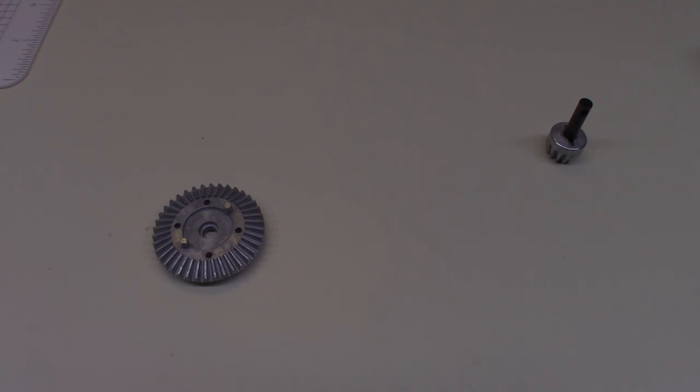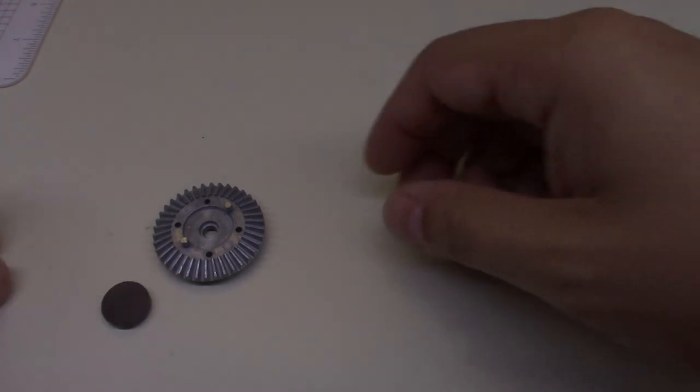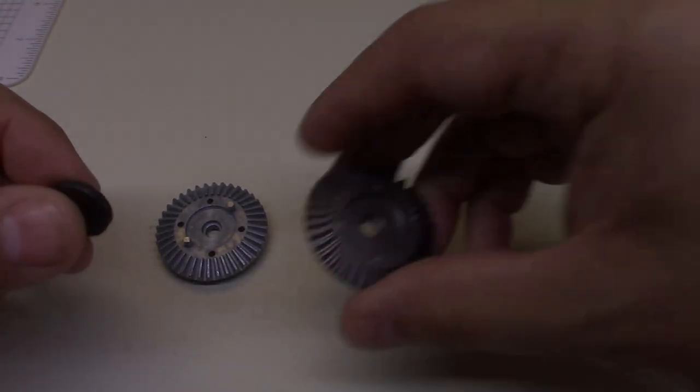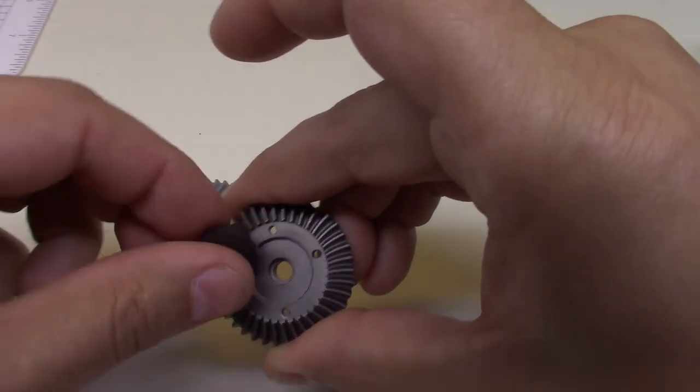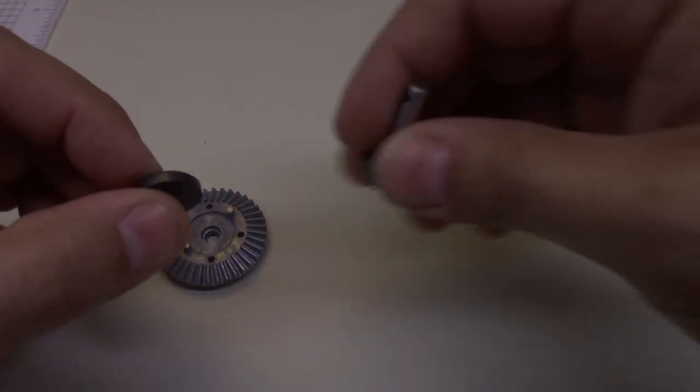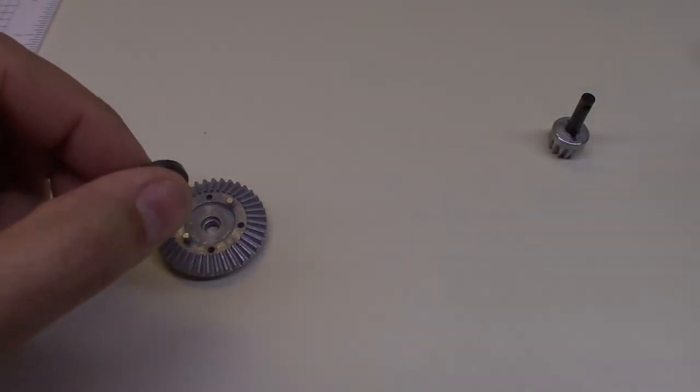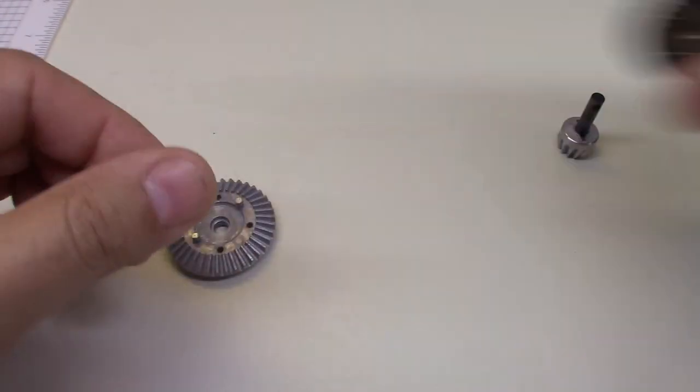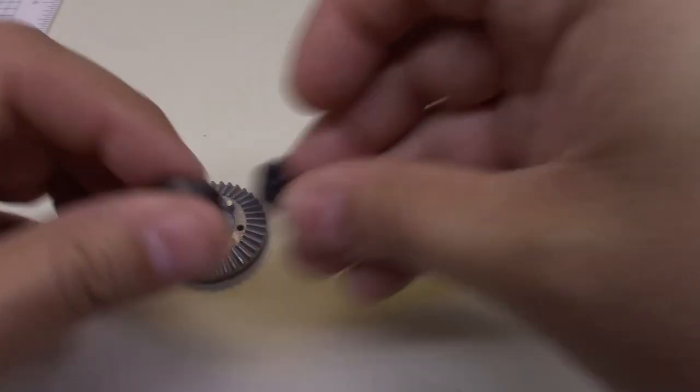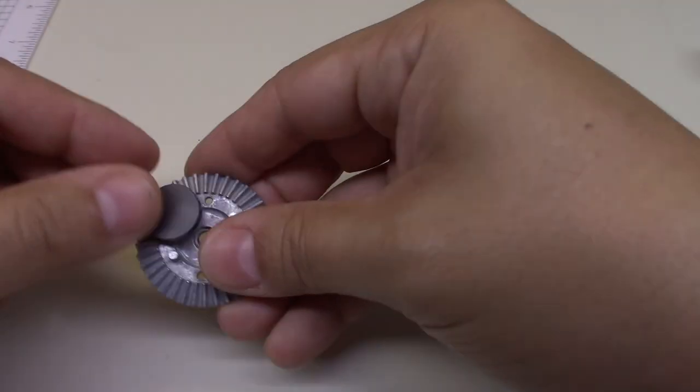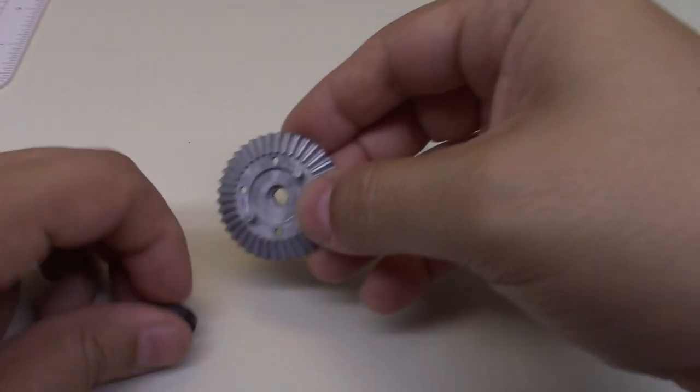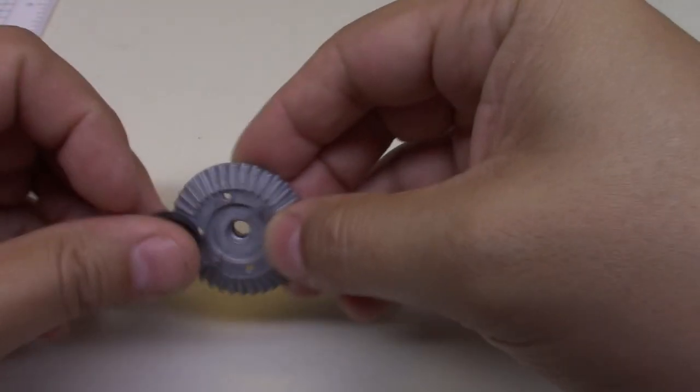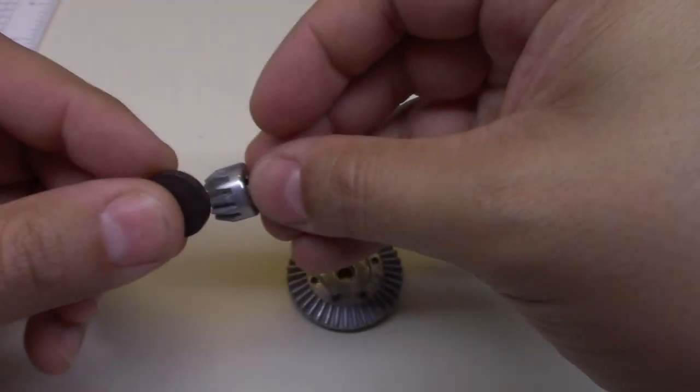Let me grab a file and also grab a magnet and we'll see how this thing stacks up. All right, so here's a magnet. You can see that with the Axial upgraded ring gear it sticks. The Axial upgraded pinion it sticks. Vanquish sticks. Vanquish sticks. Axial OEM ready to run - nothing. Does not stick to it. This is not a ferrous metal.